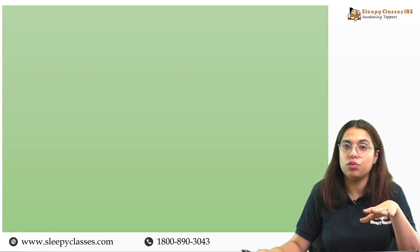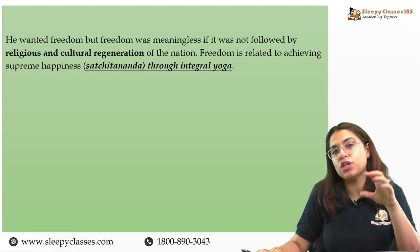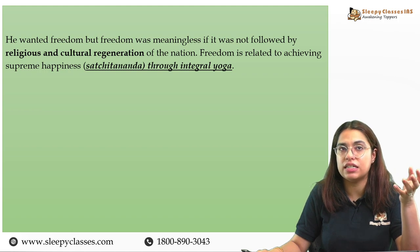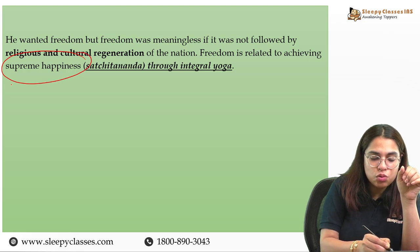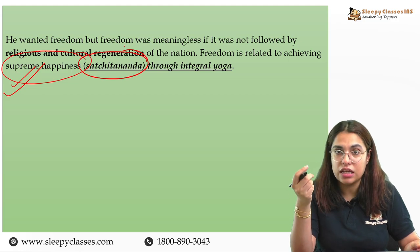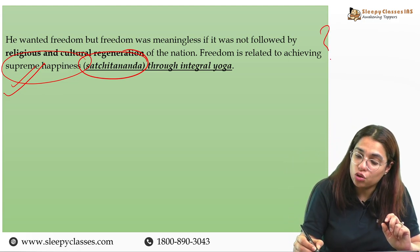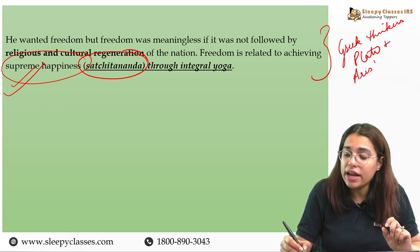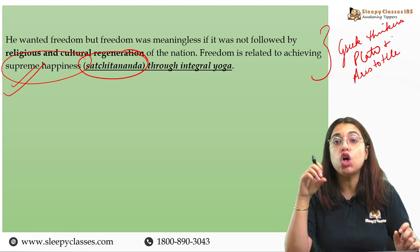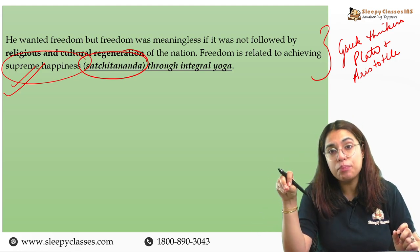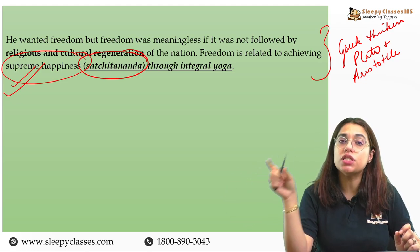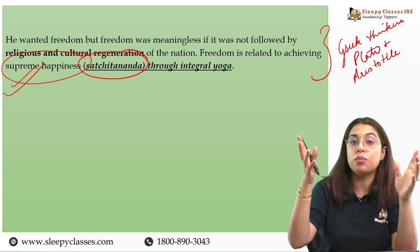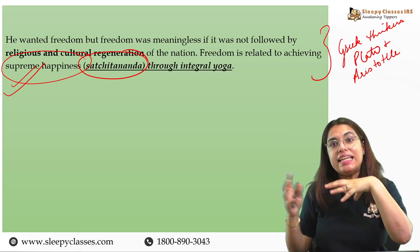Therefore, Indian nationalism was not conceived only in narrow domains of India deriving benefit from it — India's freedom was conceived for the benefit of larger humanity and the world at large. This Swaraj was also to be accompanied by both religious and cultural awakening of the country, through which we would attain supreme happiness — what he called Sachchidananda, or true supreme happiness. You can even compare him to Greek thinkers like Plato and Aristotle, who continuously talked about eudaimonia — happiness linked with a good political life. For Aurobindo Ghosh, achieving good political life through Swaraj was the means to attaining this Sachchidananda, much as Greek philosophy linked political life to eudaimonia.